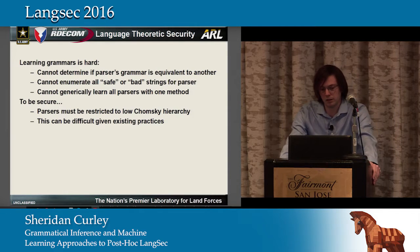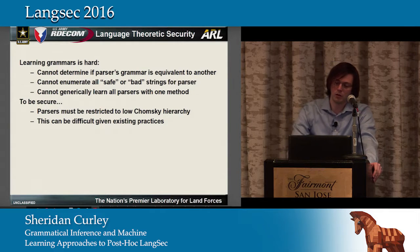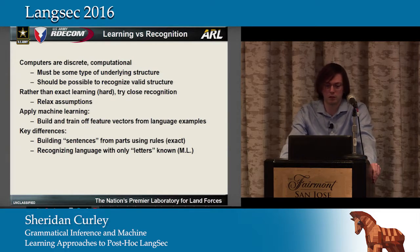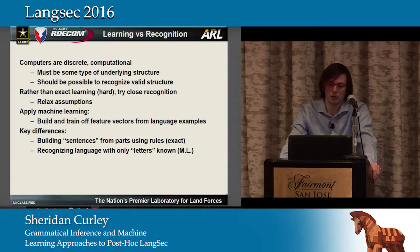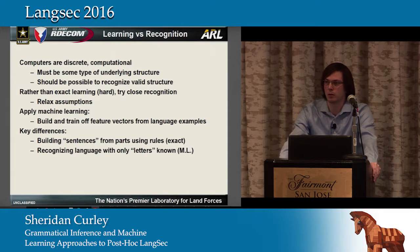We still want parsers restricted to the low level of the Chomsky hierarchy for security, but that's difficult when people either want to keep using what's easiest or don't want to rewrite what they consider not broken. To work around that, we relax the idea of exact learning and use the fact that computers are discrete and computational — there must be some underlying structure. Rather than exactly learning a grammar, we're going to try close recognition, relaxing assumptions heavily to apply at least some level of security even when people aren't willing to change to more secure systems. To do this, we'll use machine learning.